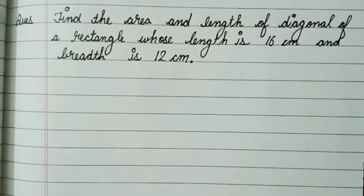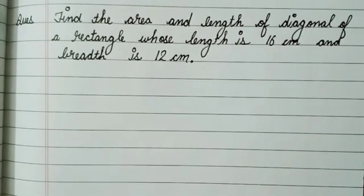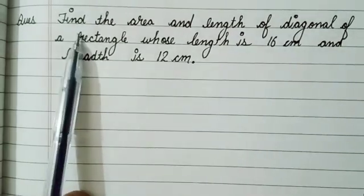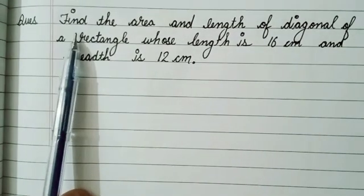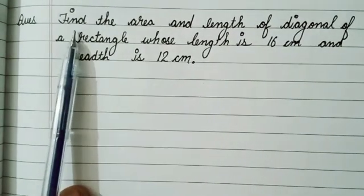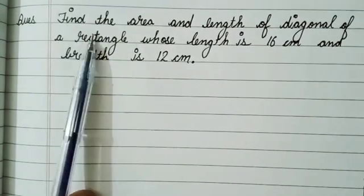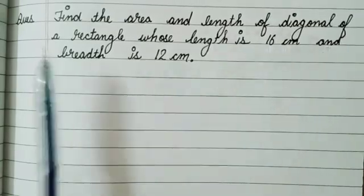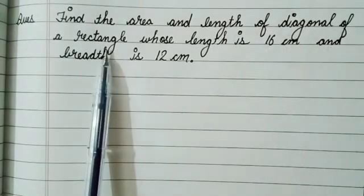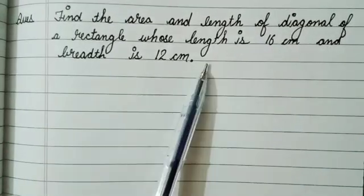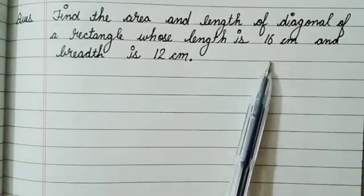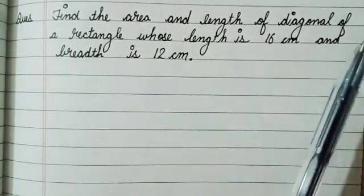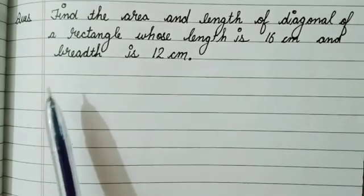Hi friends, welcome back to my channel. Today we are going to find the solution of this question: find the area and length of diagonal of a rectangle whose length is 16 centimeters and breadth is 12 centimeters.